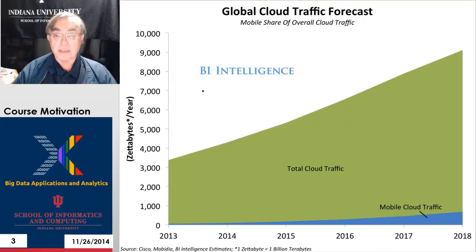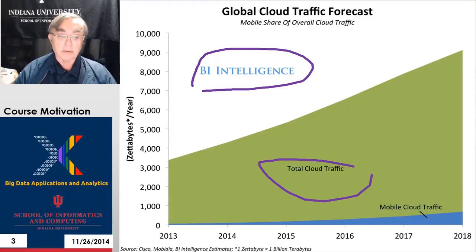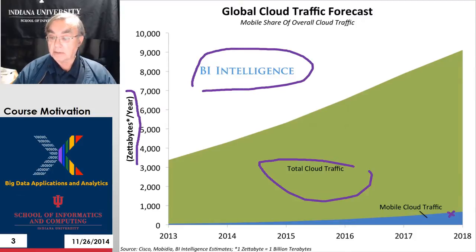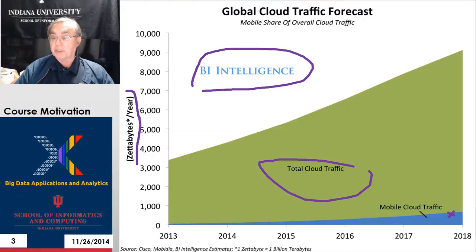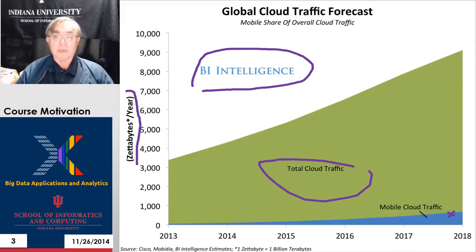Here is some detail from a Business Intelligence service showing total cloud traffic in zettabytes per year. We also have mobile cloud traffic, which is increasing more rapidly than the total, though it's still a small part. Many people think that not so far in the future, mobile will be the dominant use of all personal traffic.